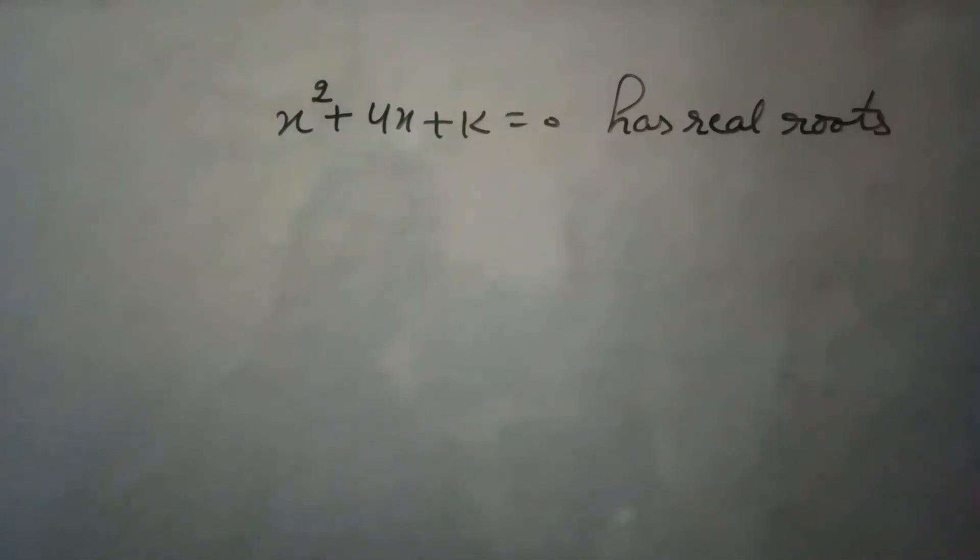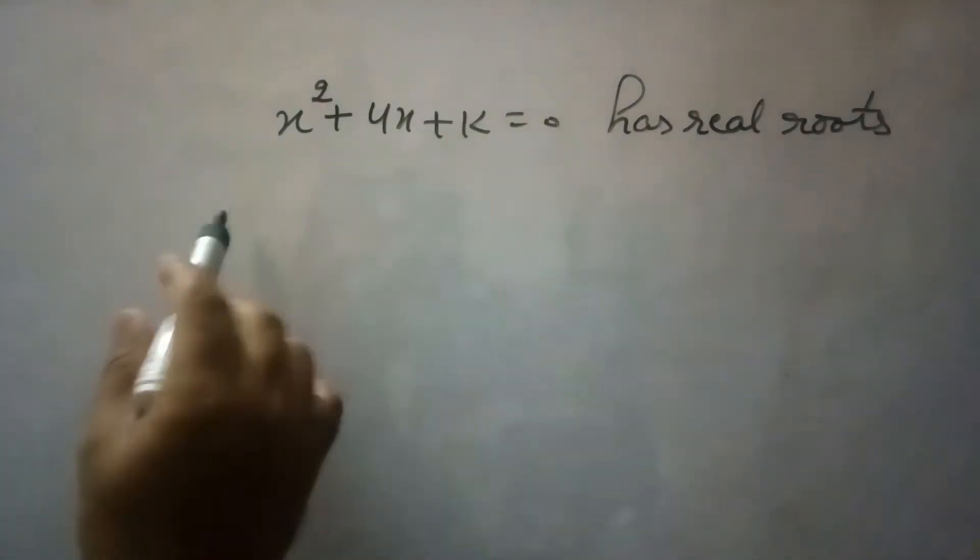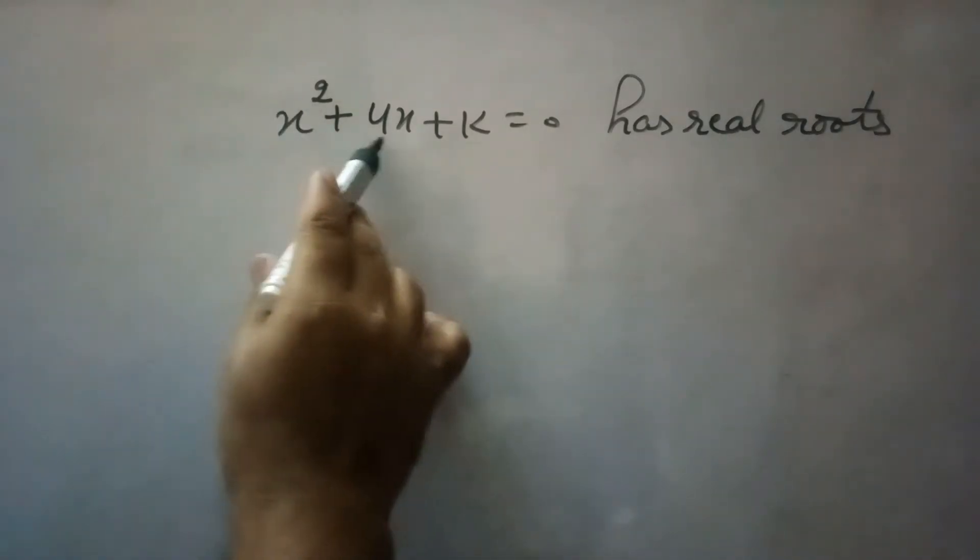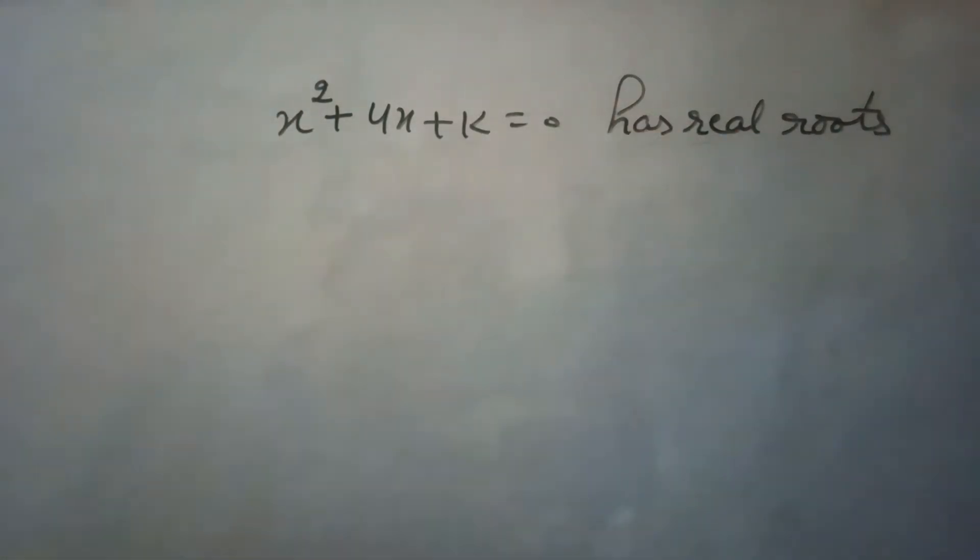The question asks us to find the value of k such that x² + 4x + k = 0 has real roots.